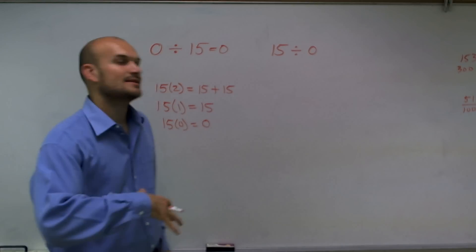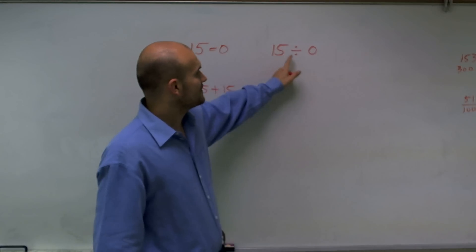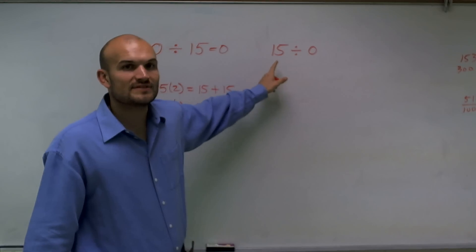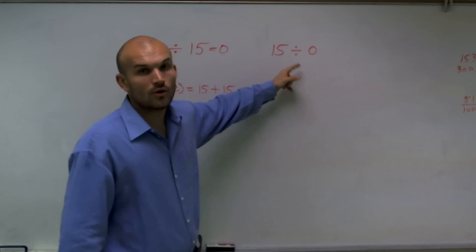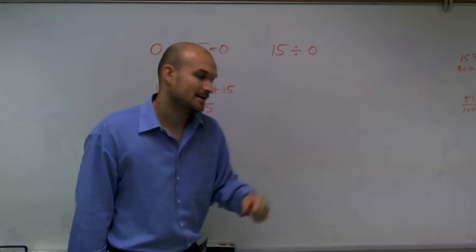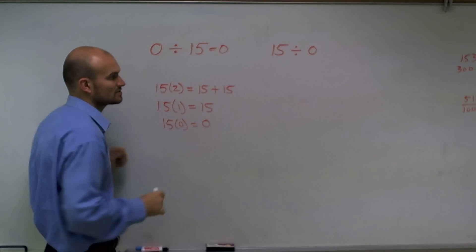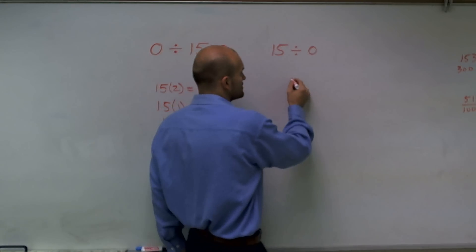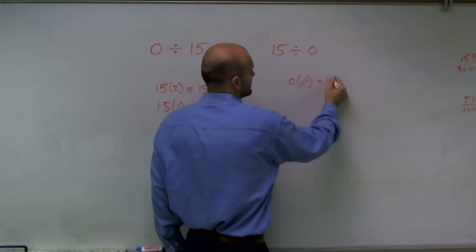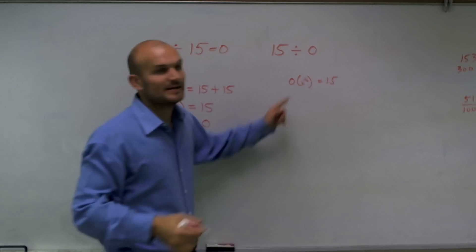Now let's look at it the other way. Here I have 0 goes into 15. So how many 0s go into 15? Well, if we go back from this property, if I say anything times 0 equals 0, well, 0 times 0 or 0 times anything is never going to equal 15.